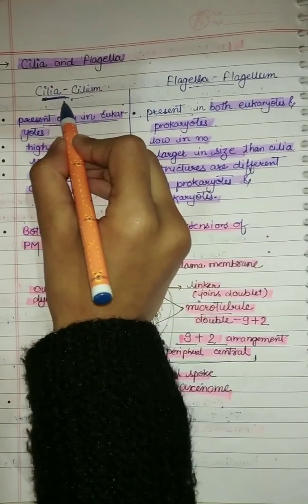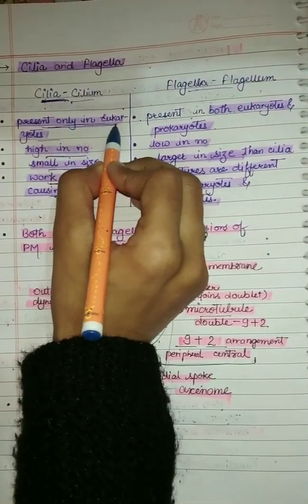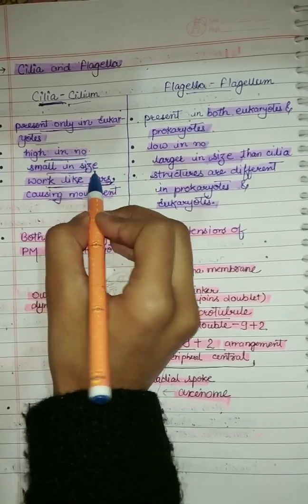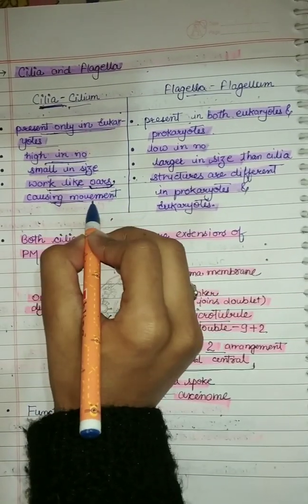This topic is Cilia and Flagella. Cilia are hair-like outgrowths of the cell membrane, present only in eukaryotes. They are high in number and smaller in size, working like oars that cause movement.